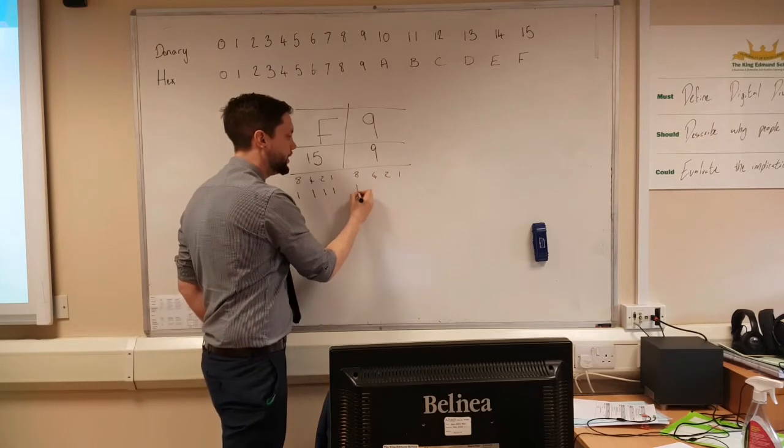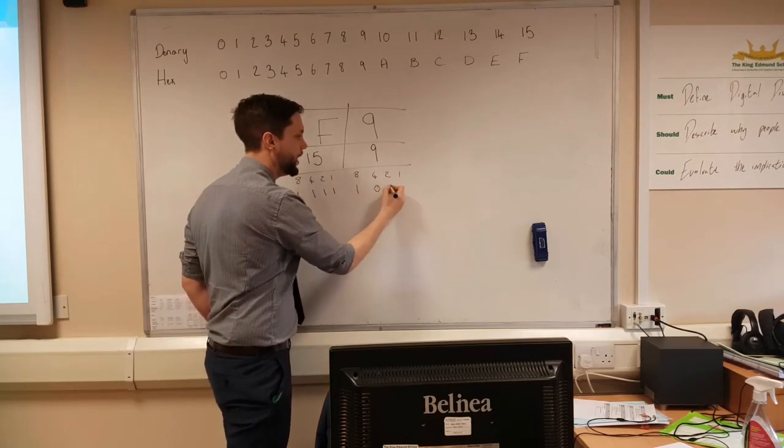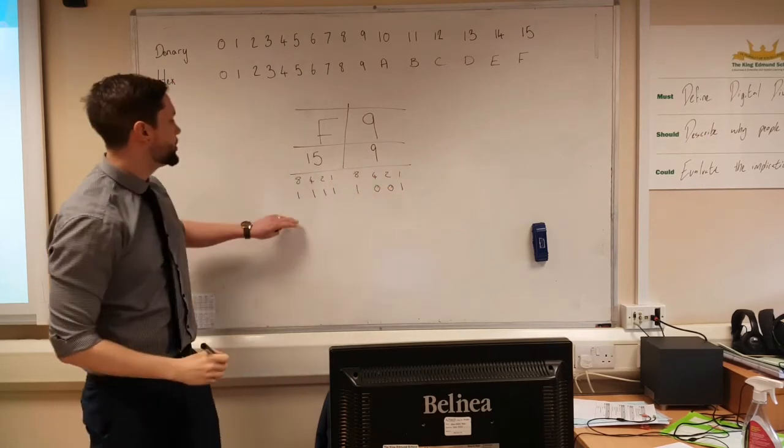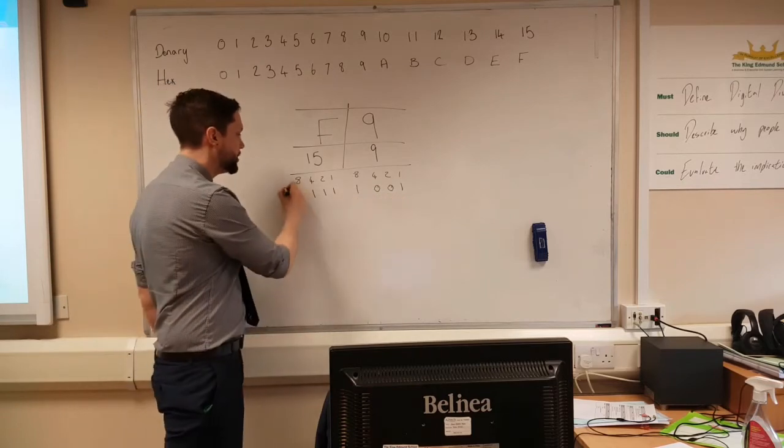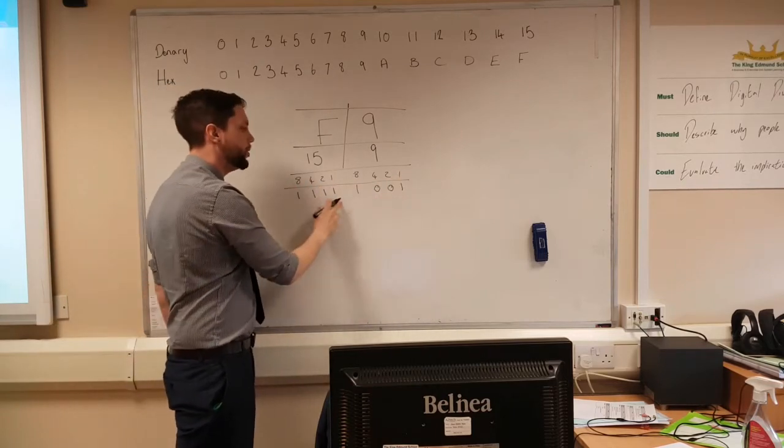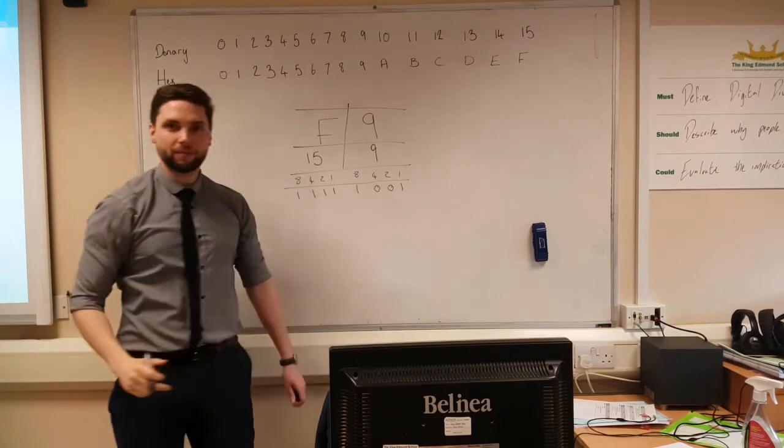And then for the nine, I need the eight on, this is off, that's off, and I need the one on. So my binary number there, finishing it off there, is one, one, one, one, one, zero, zero, one.